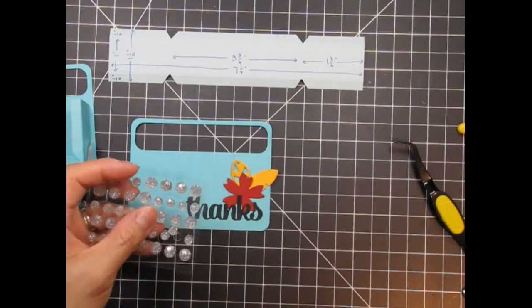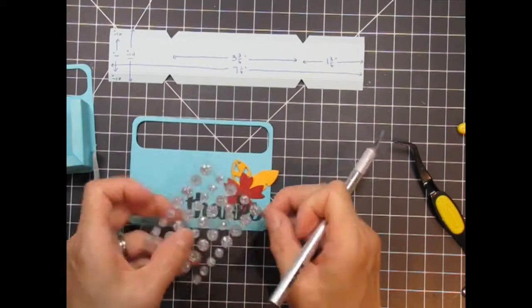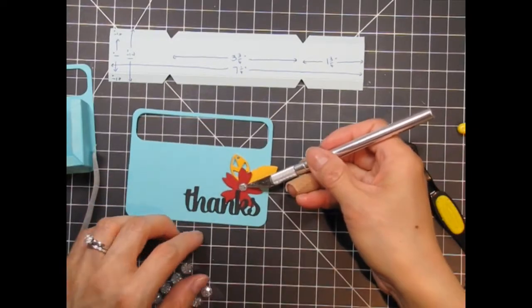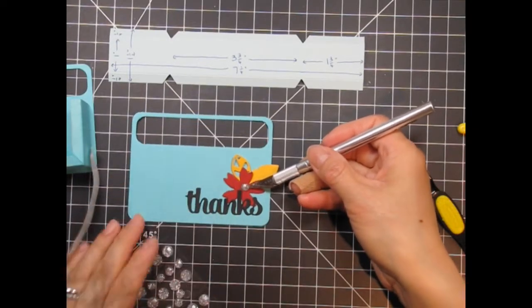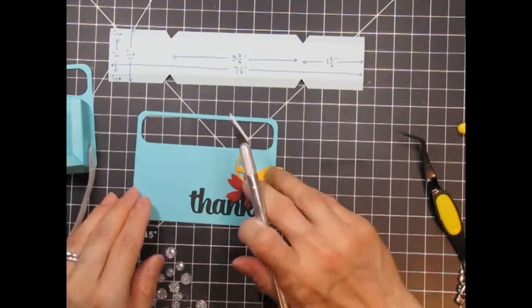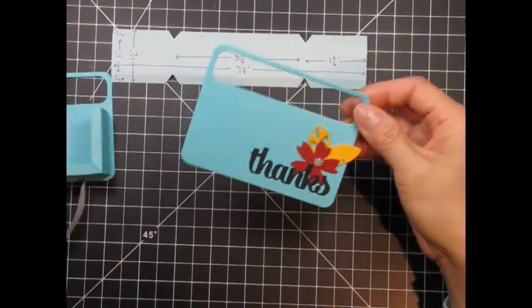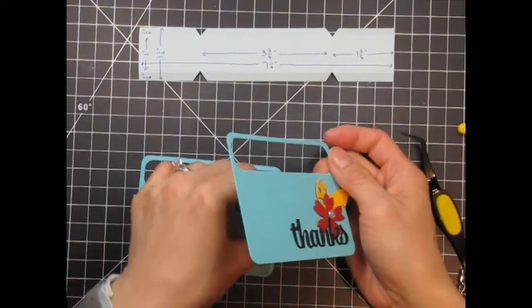Next, I want to add a clear rock candy embellishment to the center of the flower. Now the panel is complete and I can attach it to the rest of the box.